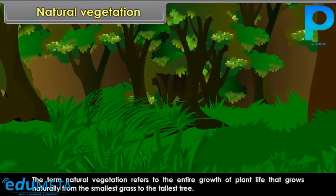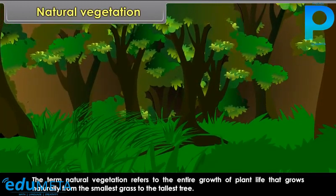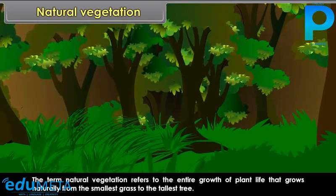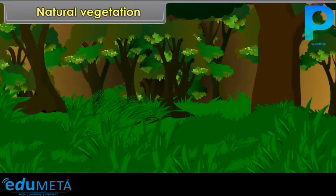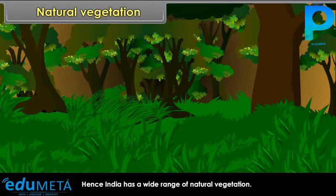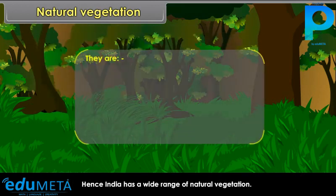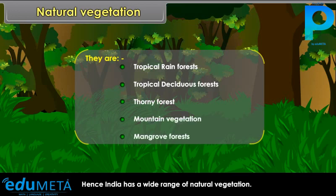The term natural vegetation refers to the entire growth of plant life that grows naturally, from the smallest grass to the tallest tree. Climatic conditions vary in India from place to place and region to region; hence, India has a wide range of natural vegetation: tropical rainforests, tropical deciduous forests, thorn forests, mountain vegetation, and mangrove forests.